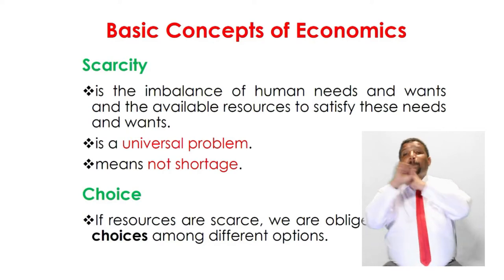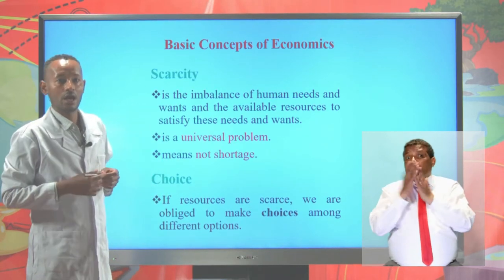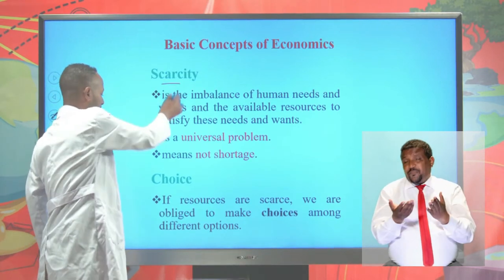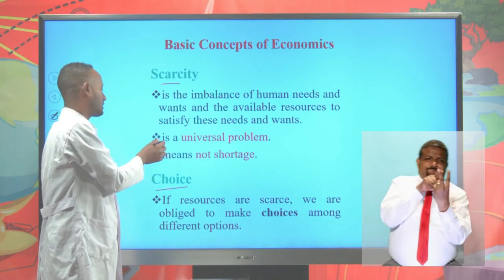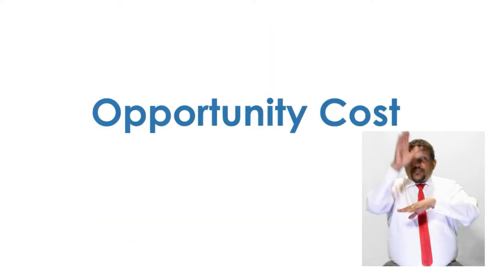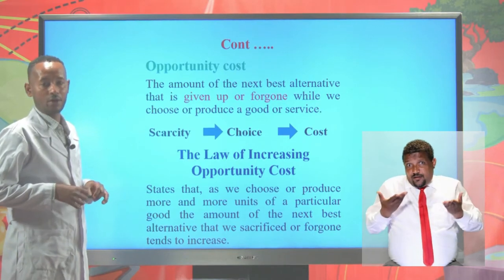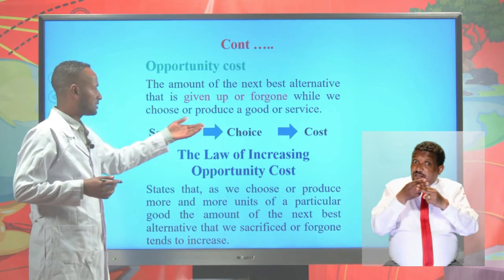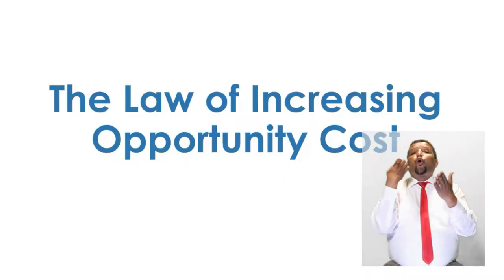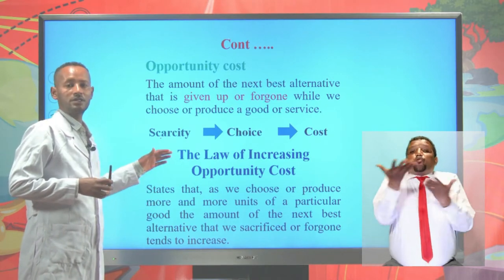Now let's see the basic concepts of economics. Scarcity is the imbalance between human needs and wants, caused by the limited number of resources. If there is scarcity, there is choice, and if we are obliged to make a choice, we incur cost — called opportunity cost. Opportunity cost is the amount of the next best alternative that is foregone while we produce a commodity. There is also the law of increasing opportunity cost, which states that the opportunity cost of a commodity will always increase.